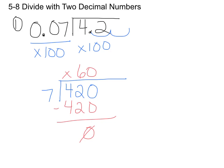Now if I want to check to make sure, hey, does this really work? I absolutely can take my quotient, and I can multiply by my original divisor. And if this work is correct, then my product should be 4 and 2 tenths.